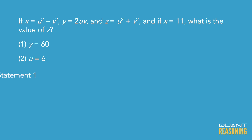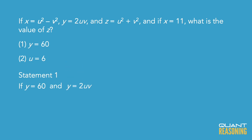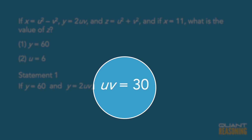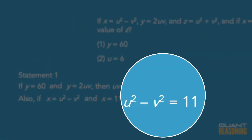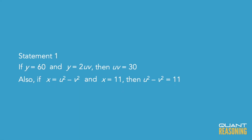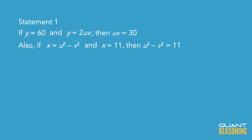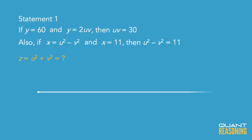I'm just going to focus on statement one for this video. From that statement and from the free information, we can infer that the product uv is 30. We can also infer from the free information that the difference of squares for u and v is 11. And we want to find the sum of the squares — so where are u squared and v squared on the number line?